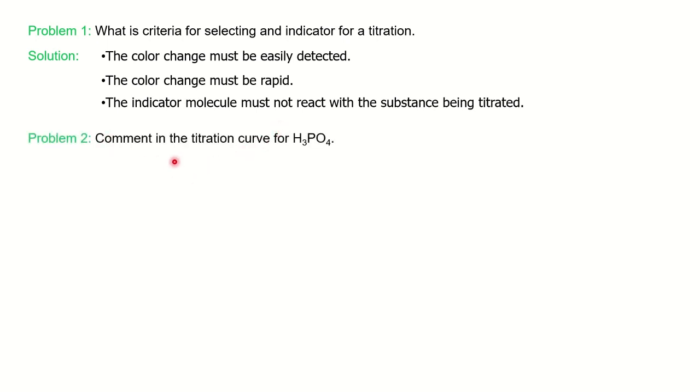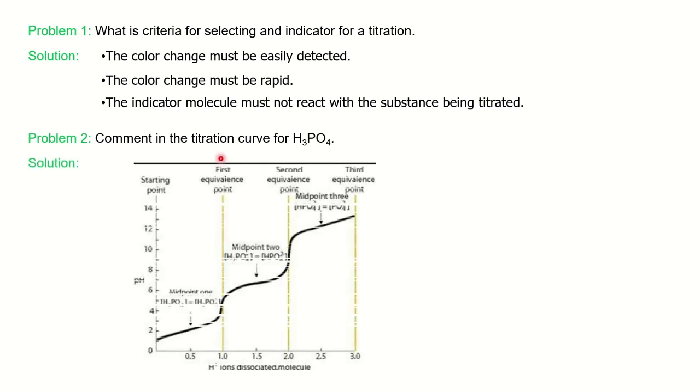Next question is: comment on the titration curve for H₃PO₄. This question may belong to 3 to 4 marks category. Since they are asking you titration curve, you have to plot the titration curve here. You can see here we have plotted this pH with respect to the H plus ions and you can see there are 3 midpoints in this. Three buffer solutions are there.